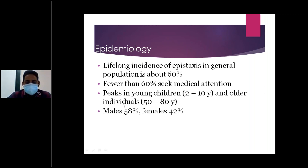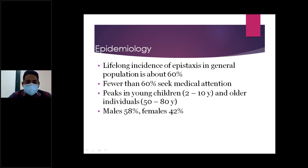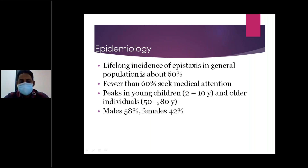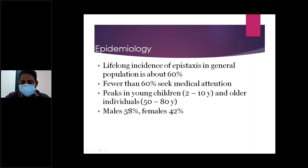Among the 60%, those who seek medical attention is less than 60%. Coming to age distribution, epistaxis has a bimodal distribution — it occurs more commonly in children, especially less than 16 years, particularly the 2 to 10 year age group, and also more commonly in adults greater than 50 to 80 years. Regarding sex distribution, it is more common among males than females.